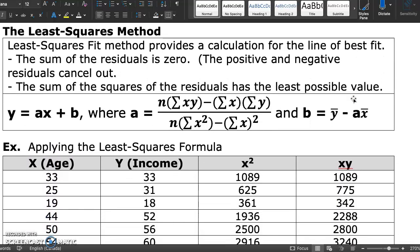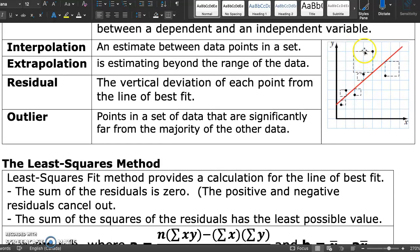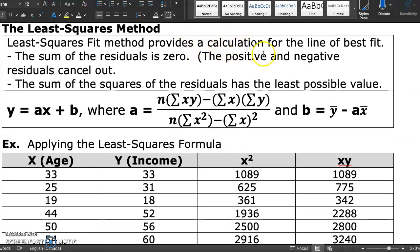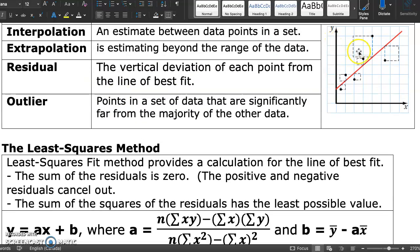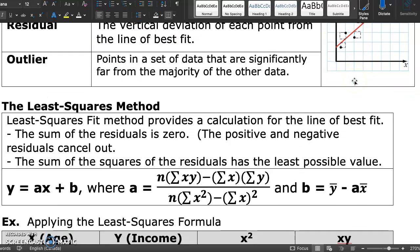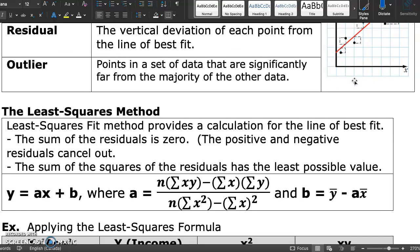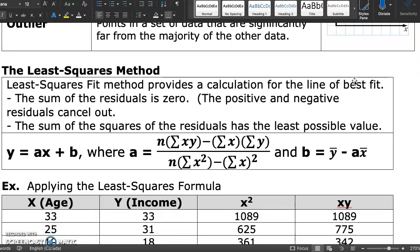The least squares method is given its name because if we look at these residuals and square them, we're trying to minimize the area in each of those squares. The closer that the data is to the model, the better the fit. The sum of the residuals is zero. The positive and negative residuals cancel out. Notice there's some points that are above and some that are below that line of best fit. We need to use that square to attribute value to both positive and negative residuals.